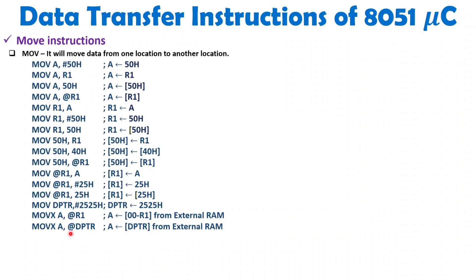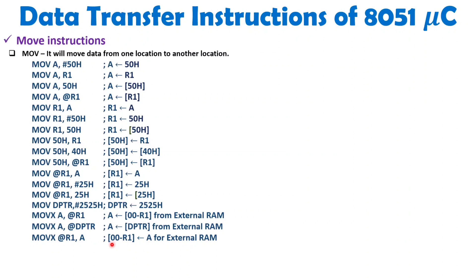When you execute MOVX A, @DPTR, the data pointed to by DPTR in external RAM is moved into the accumulator. When you execute MOVX @R1, A, the content of the accumulator is moved to the external RAM location pointed by R1, using 00 padded in the upper byte followed by R1's value as the 16-bit address. When you execute MOVX @DPTR, A, the content of the accumulator is copied to the external RAM address pointed by DPTR.